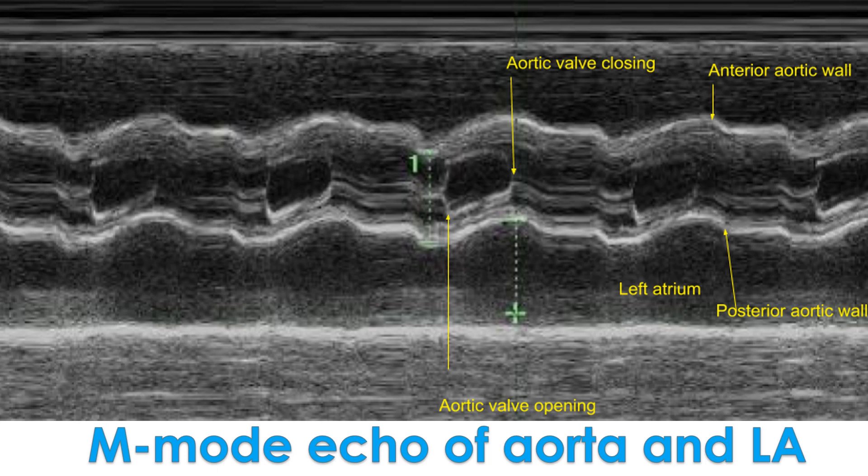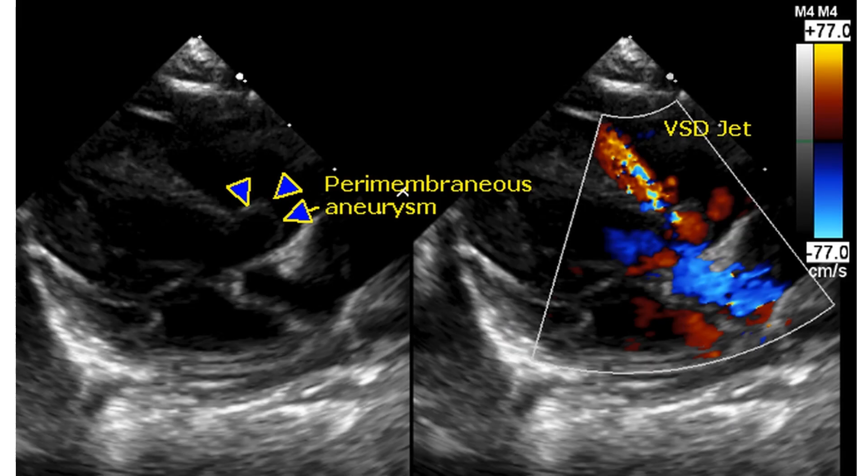In general, left atrial and aortic diameters are roughly equal when seen from the parasternal long axis view. So it is easy to make out enlargements, though this does not apply when both are dilated. The size of a ventricular septal defect is compared to the diameter of the aortic annulus.